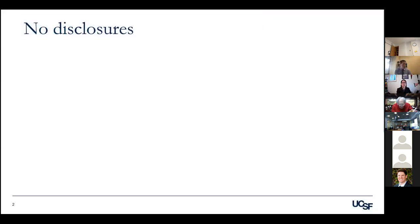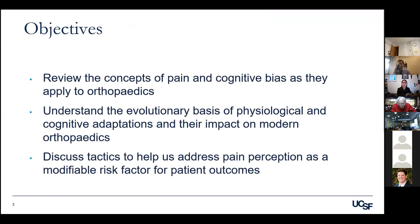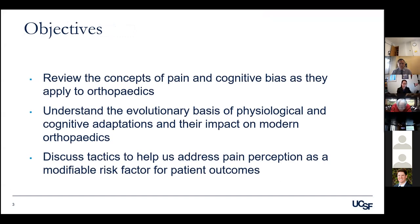I have no disclosures relevant to this talk. My objectives for today are to review the concepts of pain and cognitive bias as they apply to orthopedics, understand the evolutionary basis of physiological and cognitive adaptations and their impact on modern orthopedics, and discuss tactics to help us address pain perception as a modifiable risk factor of patient outcomes. This talk is not meant to be an exhaustive review on how to treat pain, but rather to approach this concept from a different perspective to spur a discussion on how to better help our patients understand and manage their pain.